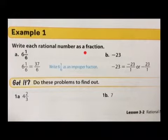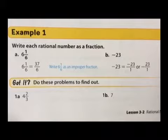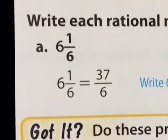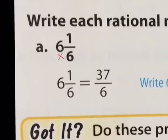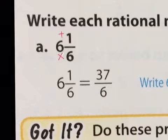Write each rational number as a fraction. We have a mixed number here: 6 and 1/6. When we want to convert this into an improper fraction — this is a little review from 5th grade — we multiply the denominator by the whole number and then add the numerator. So it would be 6 times 6 is 36, plus 1 is 37, giving us 37/6. That's an improper fraction.